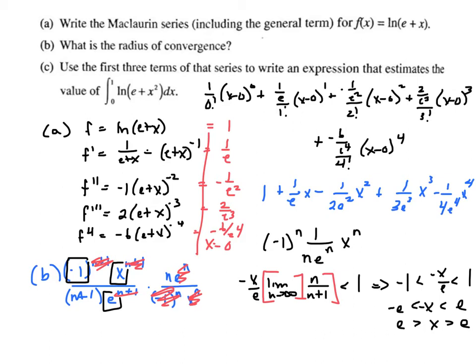Now going back up here and checking those endpoints. We're between negative e and e. If I plug in e, e to the n over e to the n would cancel out, and I'd have 1 over n but alternating, so it would converge conditionally. If I plugged in negative e, that would take out the alternating part, so I'd end up with 1 over n, which is a divergent series. So this is my interval of convergence.